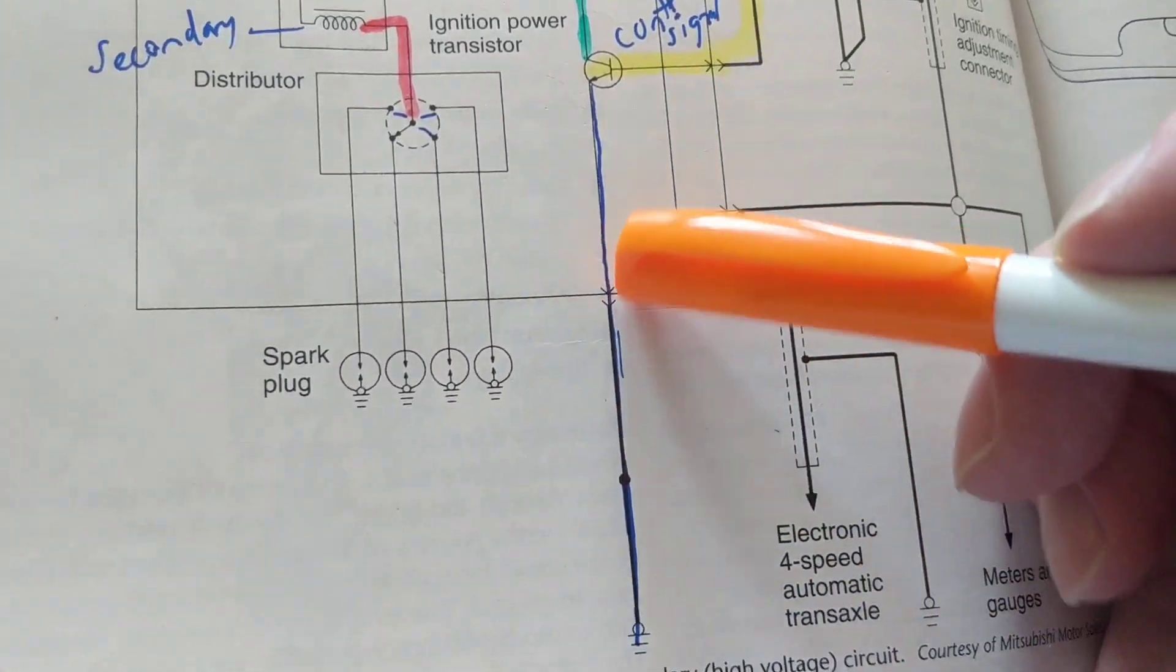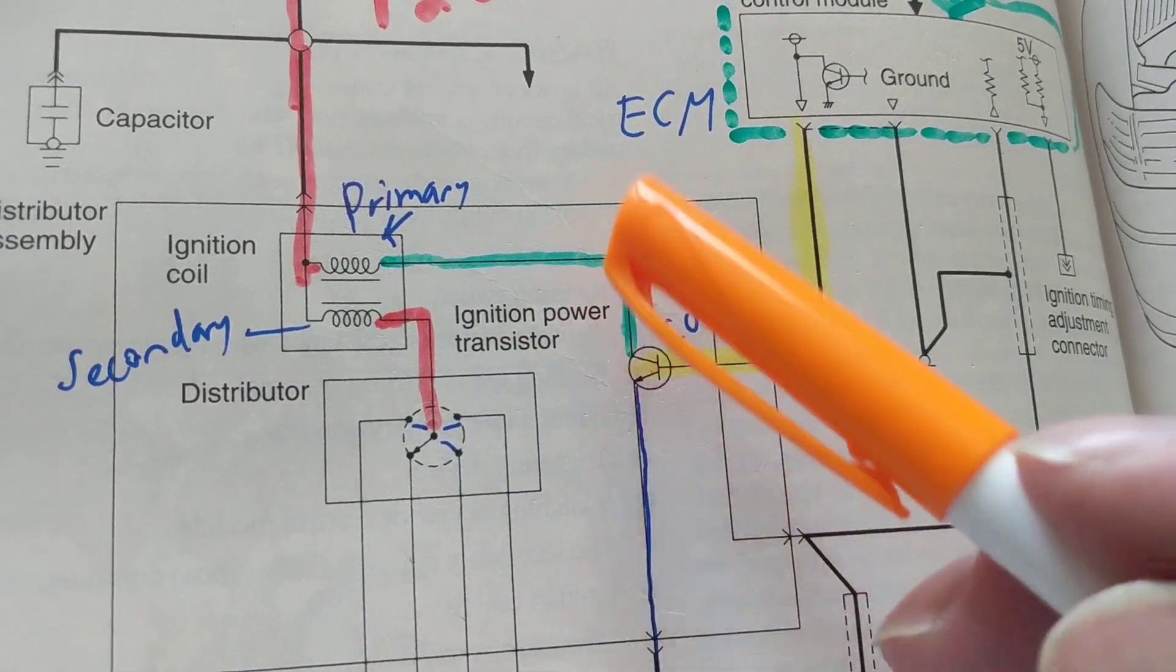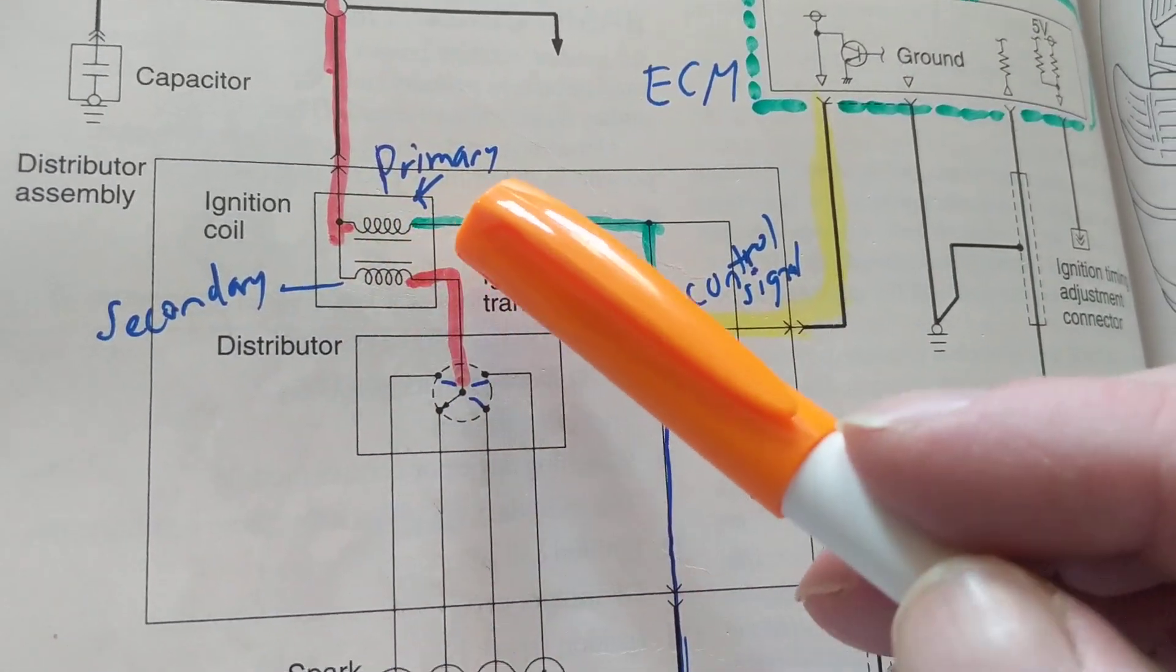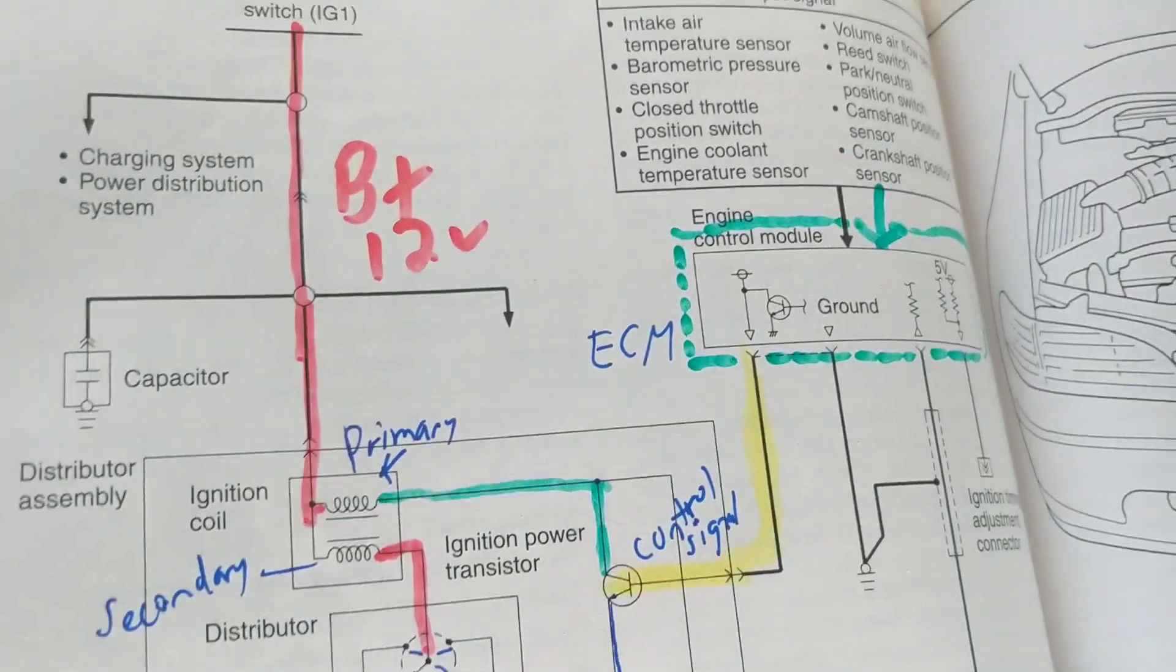As you can see, this goes to ground. It will fire or trigger this transistor. When it triggers, this will go off. Now you'll have a collapsing magnetic field induced into the secondary. Not to get too complicated with this, but that high voltage will be...